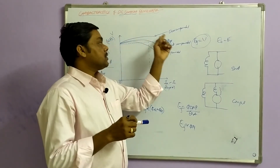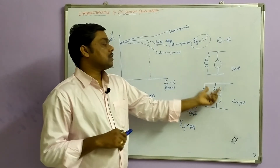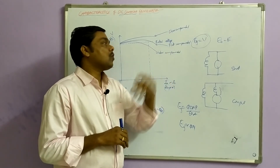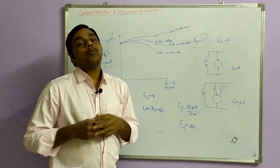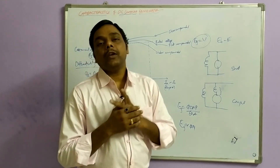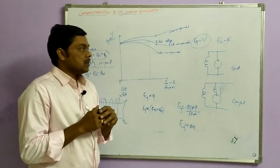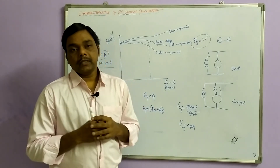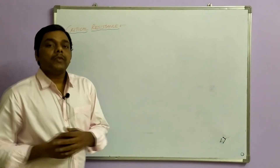Depending on our applications, we can use extra series turns to keep the voltage constant. This gives us flat compound, under compound, and over compound generators. Generally, over compound generators are used in industrial purposes so that voltage drop is less when loaded and they can operate at rated voltage. Cumulative and differential compounds also help maintain constant voltage, and the cross magnetizing and demagnetizing effects are less affected in these generators.